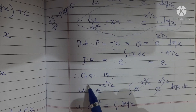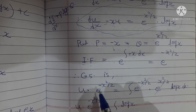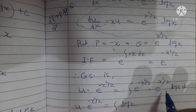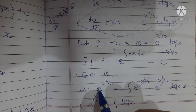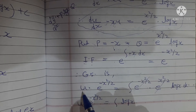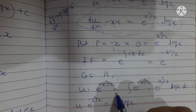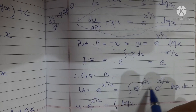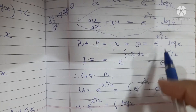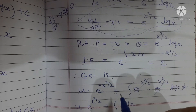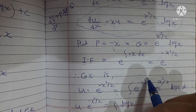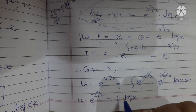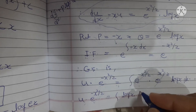The general solution is given by the standard formula: u · (integrating factor) = ∫(integrating factor · Q) dx + C. Substituting values: u · e^(-x²/2) = ∫e^(-x²/2) · e^(-x²/2) · log(x) dx. The e^(-x²/2) terms cancel, giving: u · e^(-x²/2) = ∫log(x) dx.